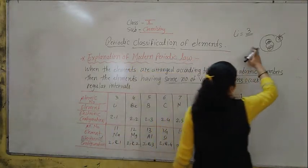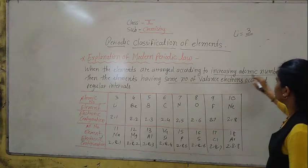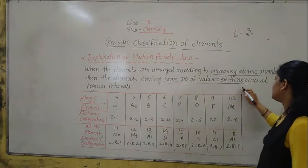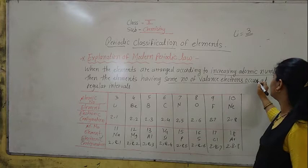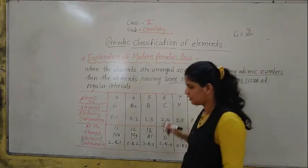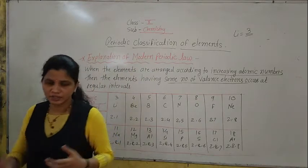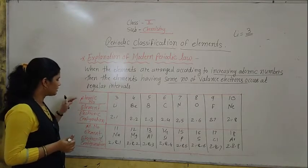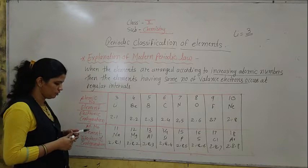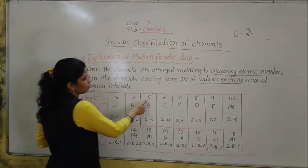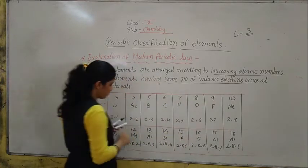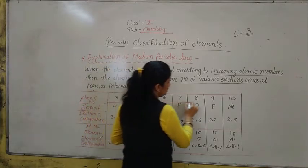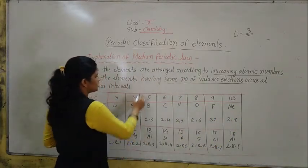So you know about valence electrons. Now, with increasing atomic number, when elements have the same number of valence electrons, they appear at a regular interval. The regular interval means after some particular elements. Now I have drawn a chart showing atomic number, element, and electronic configuration. I have arranged these elements according to the increasing order of atomic number: 3, 4, 5, 6, 7, 8, 9, 10.